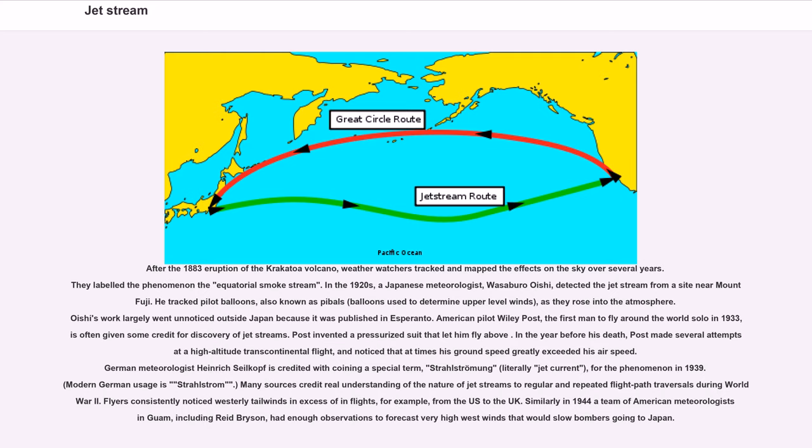Oishi's work largely went unnoticed outside Japan because it was published in Esperanto. American pilot Wiley Post, the first man to fly around the world solo in 1933, is often given some credit for discovery of jet streams. Post invented a pressurized suit that let him fly above. In the year before his death, Post made several attempts at a high-altitude transcontinental flight, and noticed that at times his ground speed greatly exceeded his airspeed.